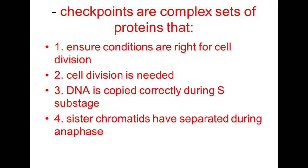These checkpoints are controlled by complex sets of proteins — not just a single protein, but multiple proteins interacting with each other and with other factors inside and outside the cell. These checkpoints ensure that conditions are right for cell division, that cell division is needed, that DNA has been copied correctly during the S substage.